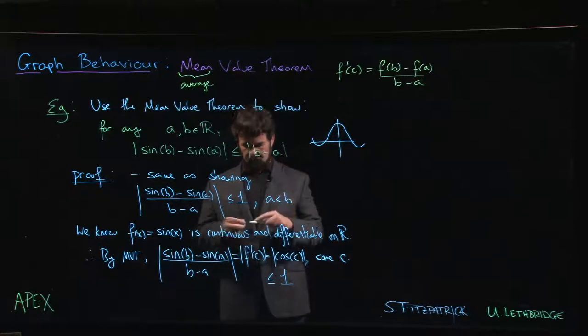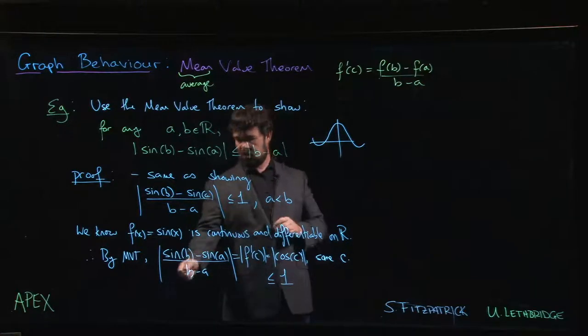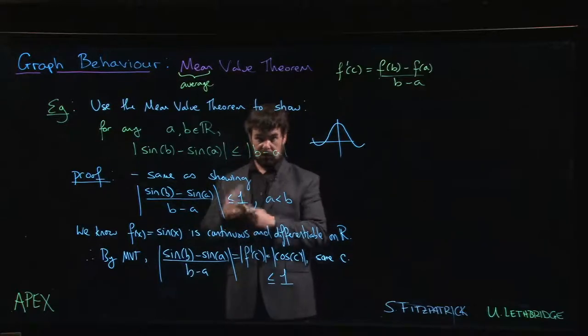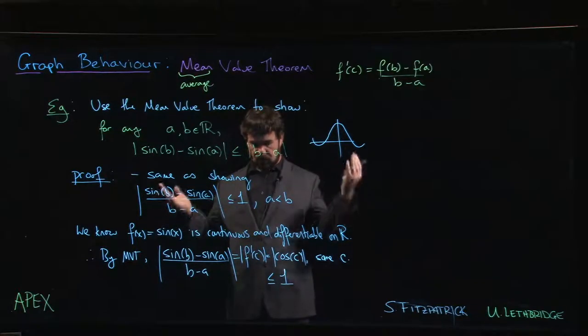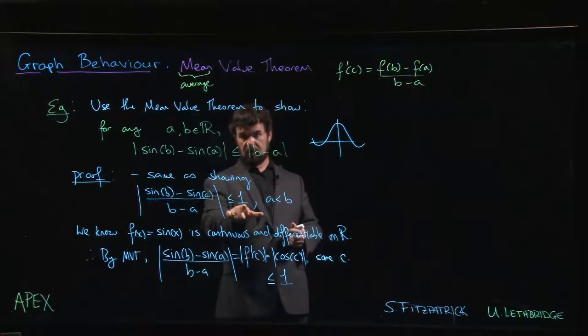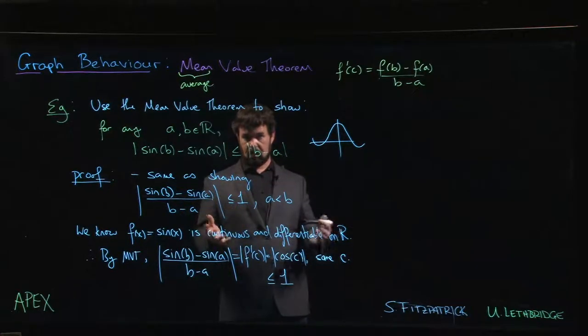So this bit here that I'm interested in—it's equal to the absolute value of cosine of some number. I know that absolute value has to be less than or equal to one, and that means this has to be less than or equal to one. That's what I needed to show.